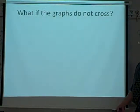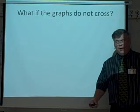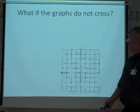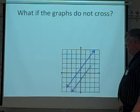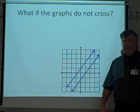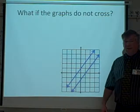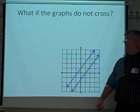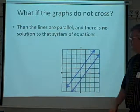What if the graphs do not cross? If you have two lines that never cross, what would the solution be? Well, let's see what that looks like. Here are two lines that are never going to cross. They're parallel. Well, the solution would be no solution. They never cross. So there is no solution here.